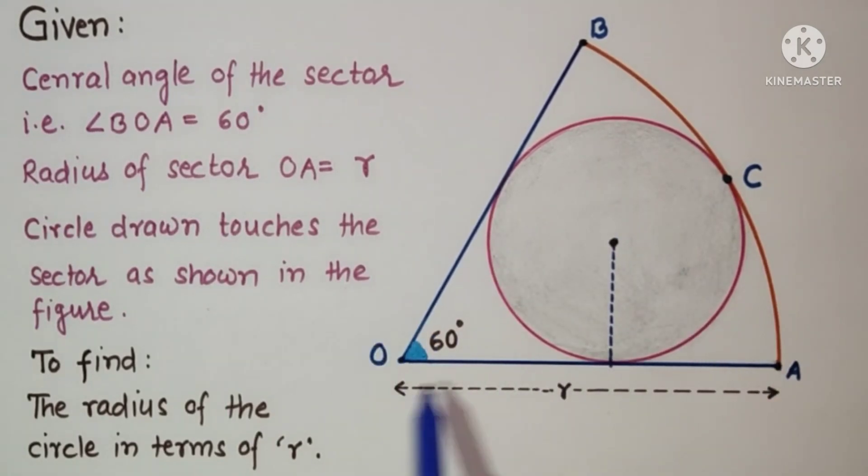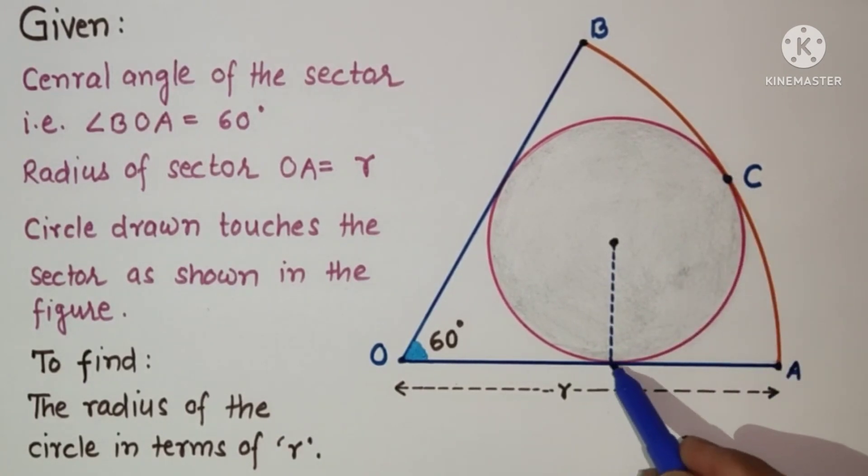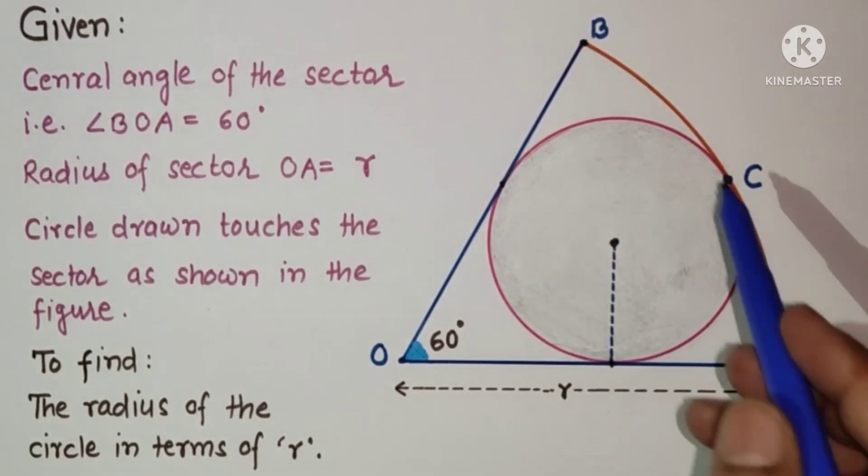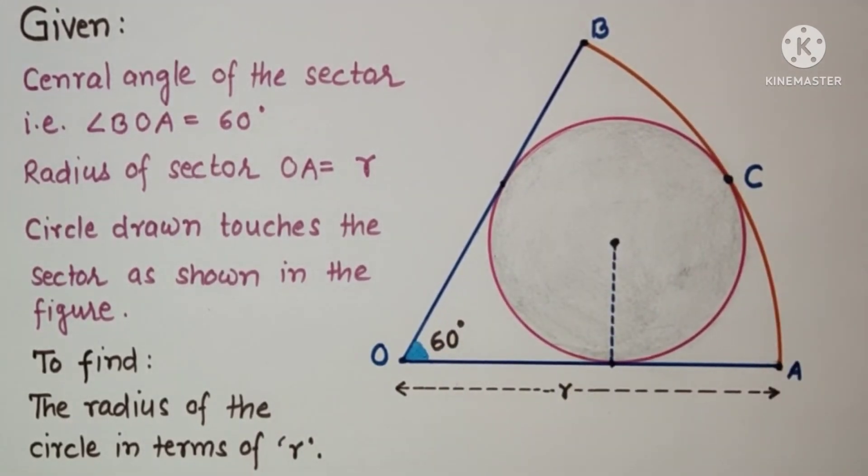This circle touches the sector at this point C and at this point. We have to find the radius of the circle in terms of R.